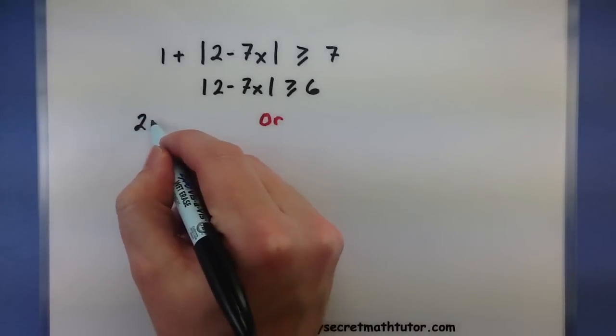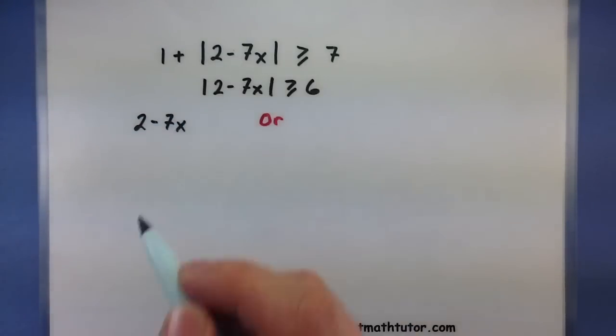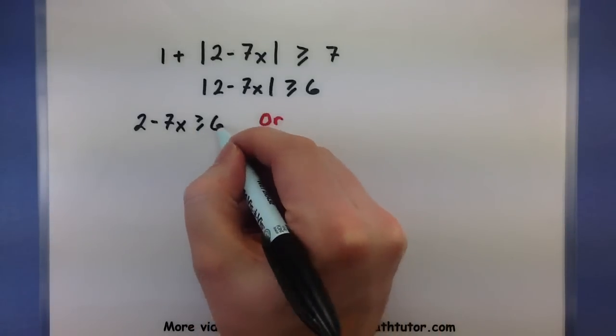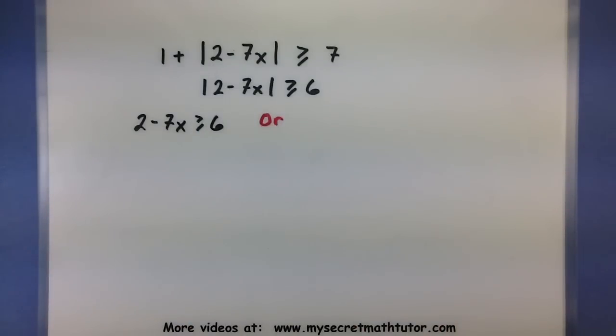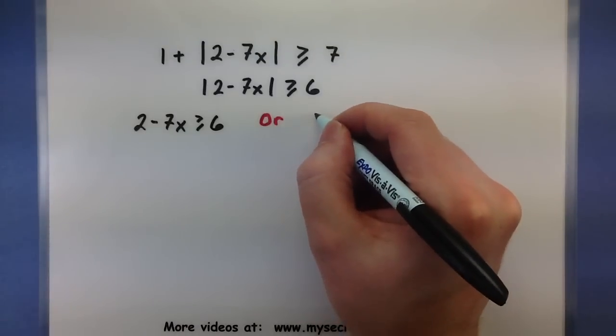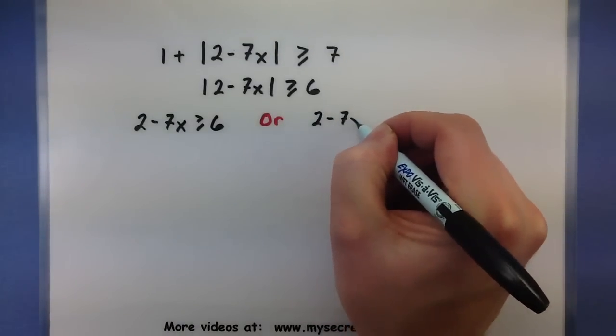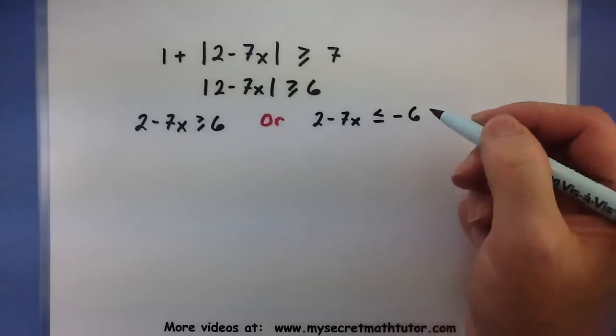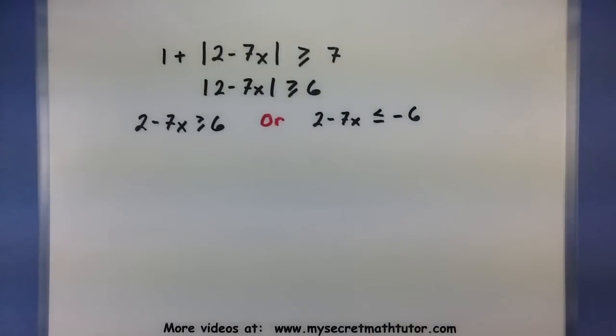So maybe the 2 minus 7x was positive, in which case, no change, it's going to be exactly the same problem. Quite possibly maybe it's going to be negative, and then we want to look at it being less than or equal to a negative 6. Alright, let's solve these separately, see what our final solution is.